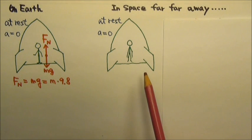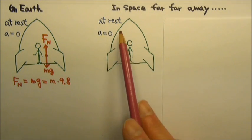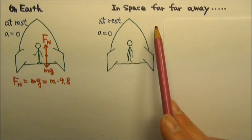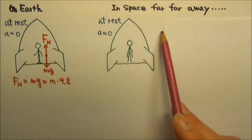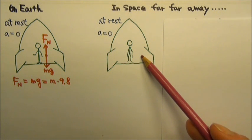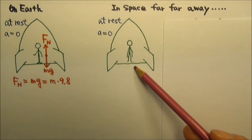Now let's consider the same person inside the same spaceship, but this time the spaceship is at rest in a location in space that is very far from any planets, the sun or stars. He would float in the spaceship because there is no gravitational force to keep his feet down on the floor.